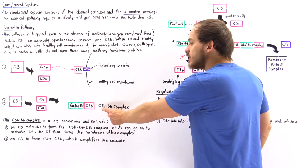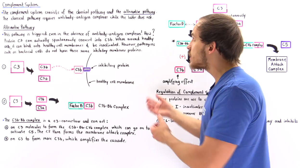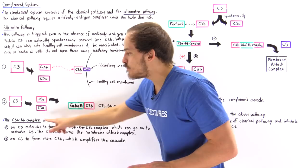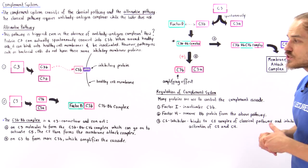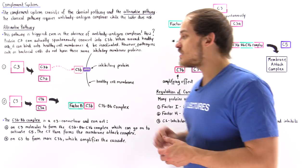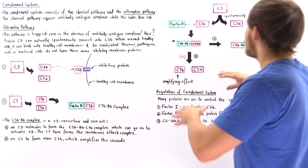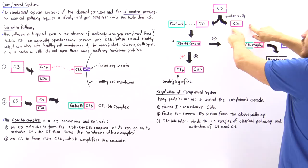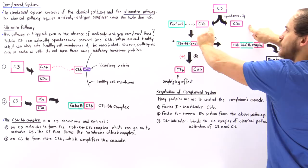When C3b and factor B combine, they form the C3b-Bb complex, and this is the major agent that is involved in the alternative pathway. This molecule is basically a C3 convertase, meaning its main substrate is the C3 molecule, and it activates C3 in two ways. So pathway A is basically the following: C3 spontaneously breaks down into C3a and C3b, and then C3b quickly reacts with factor B to form the C3b-Bb complex.